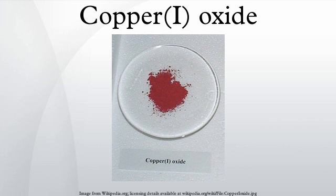Copper oxide may be produced by several methods. Most straightforwardly, it arises via the oxidation of copper metal. Additives such as water and acids affect the rate of this process, as well as the further oxidation to copper oxides. It is also produced commercially by reduction of copper solutions with sulfur dioxide. Aqueous cuprous chloride solutions react with base to give the same material. In all cases, the color is highly sensitive to the procedural details.